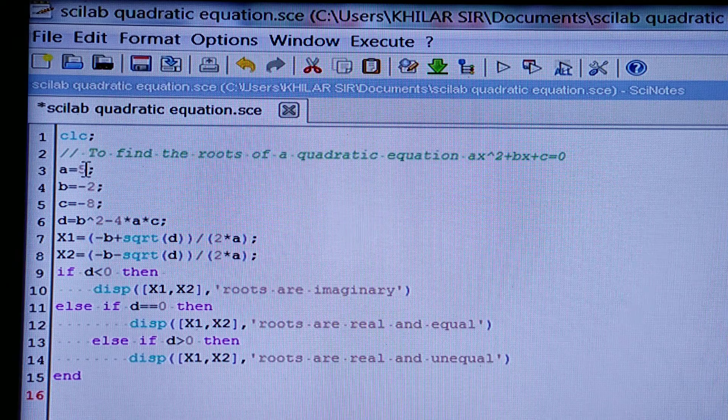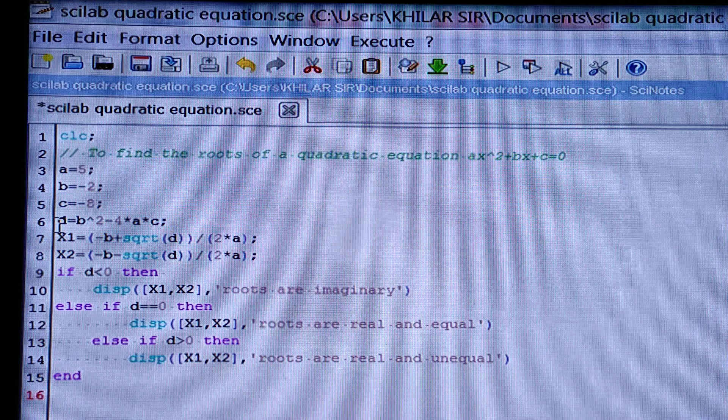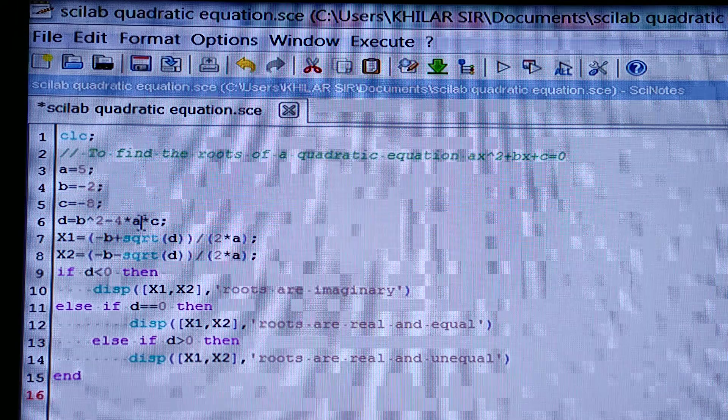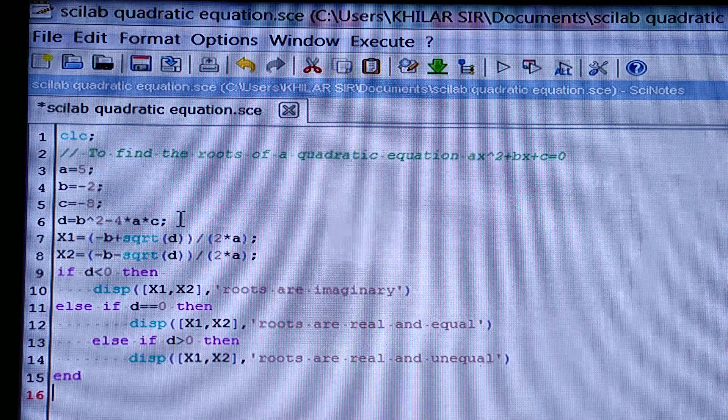Here I have taken A is equal to 5, B is equal to minus 2, C is equal to minus 8, and D is the discriminant, that is B square minus 4AC, and you have to give the semicolons, it will be better for you.